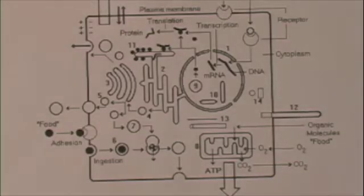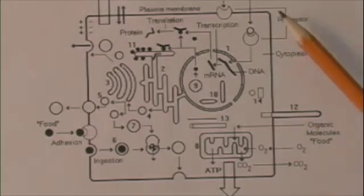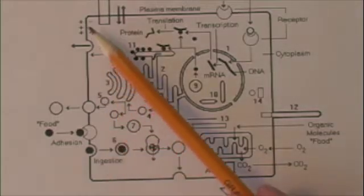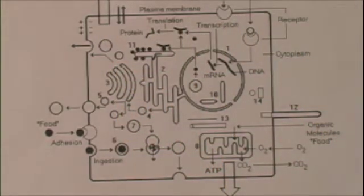First of all, let's get our bearings. This square thing you see in the middle of the screen is a cell. Now granted, it's a very schematic view of the cell, highly schematic.